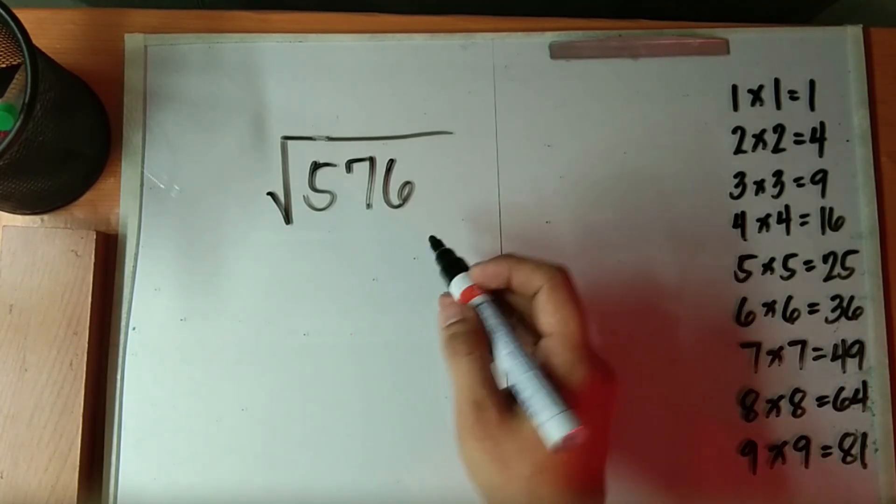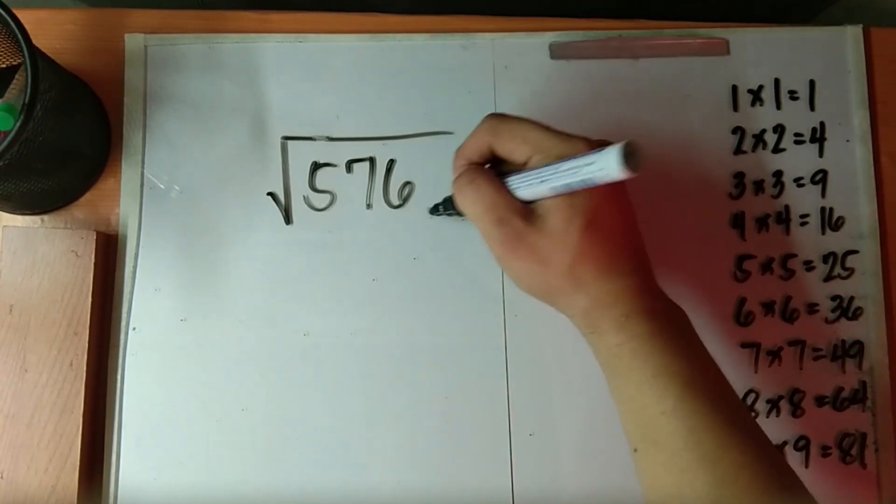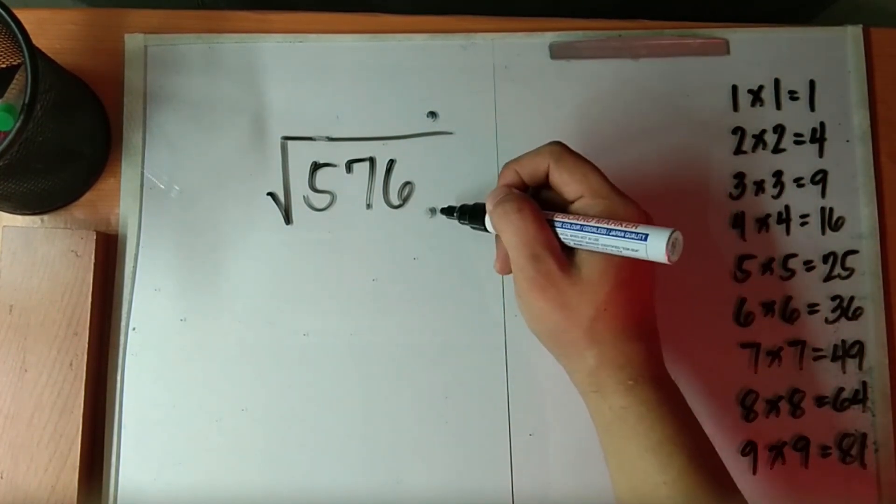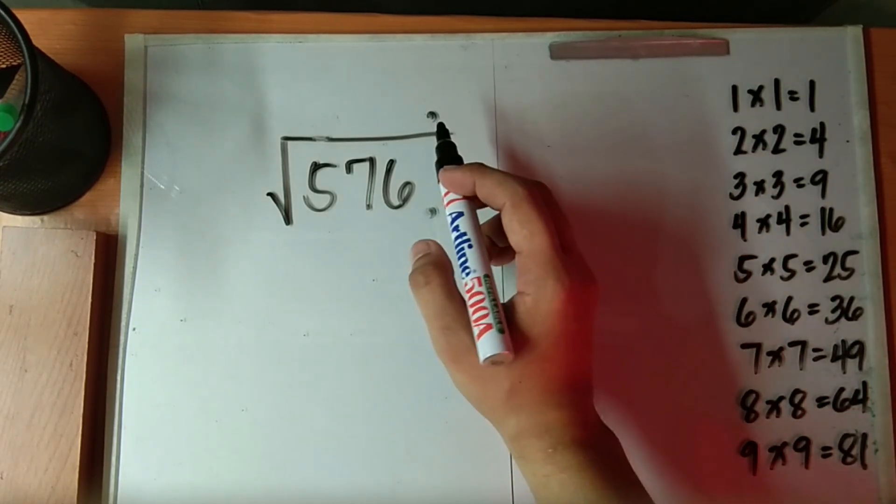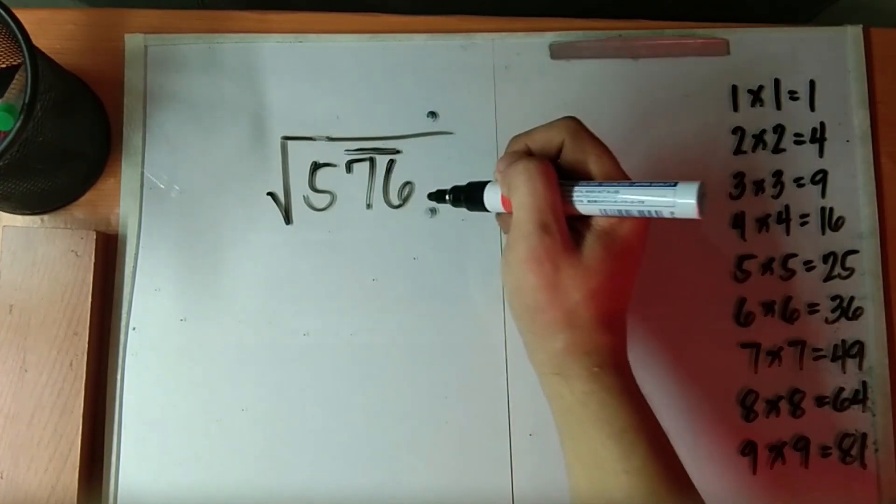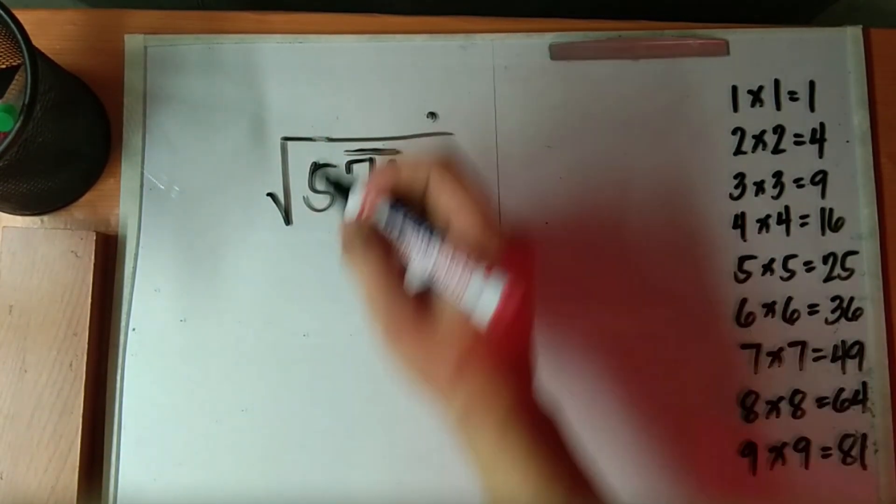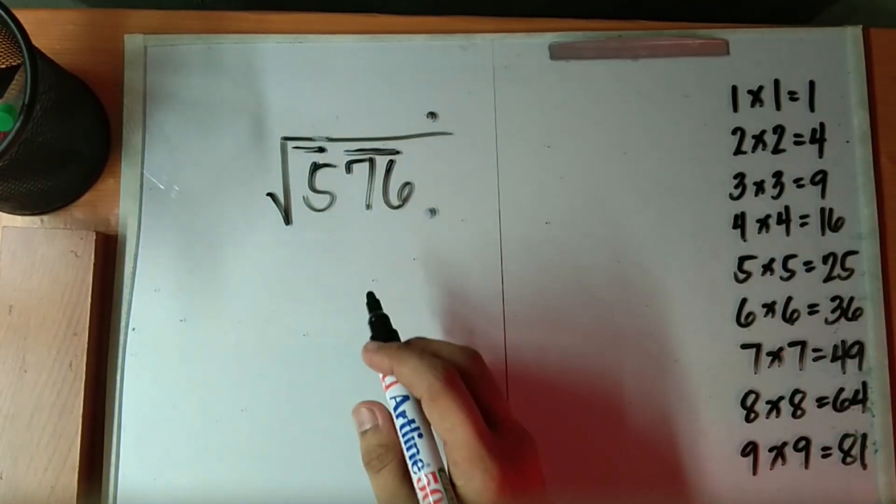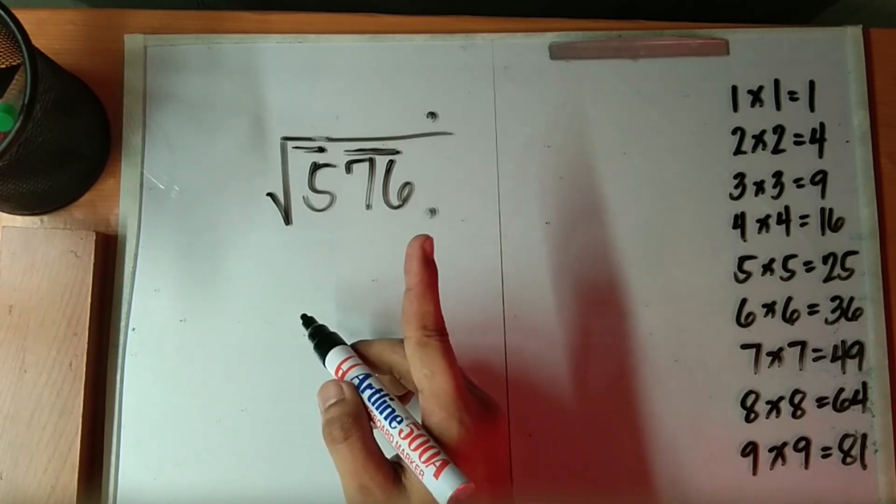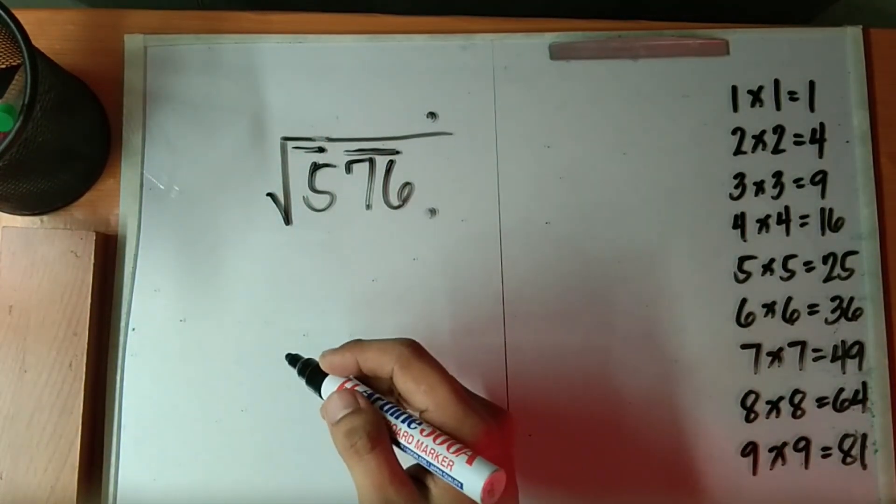So first, locate the decimal point, then place it on top of the radical sign. Next, from the decimal point, group the digits by 2's. You may use a bar on top as a symbol of pairing. So here we have 76 and 5. Since there is no more digit before 5, that is understood to be 0. Now take note, the number of pairs indicate the number of digits in our answer. Now in this case, the root of 576 is a 2-digit number.